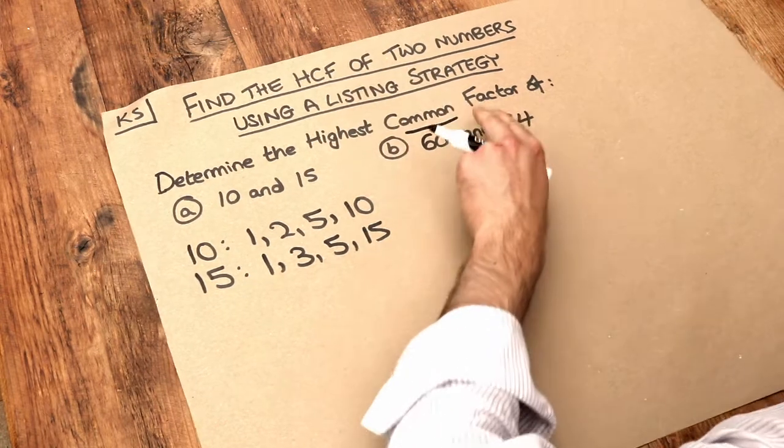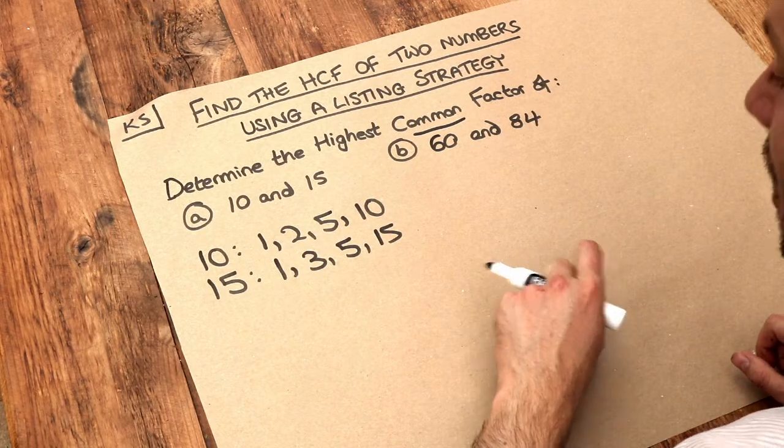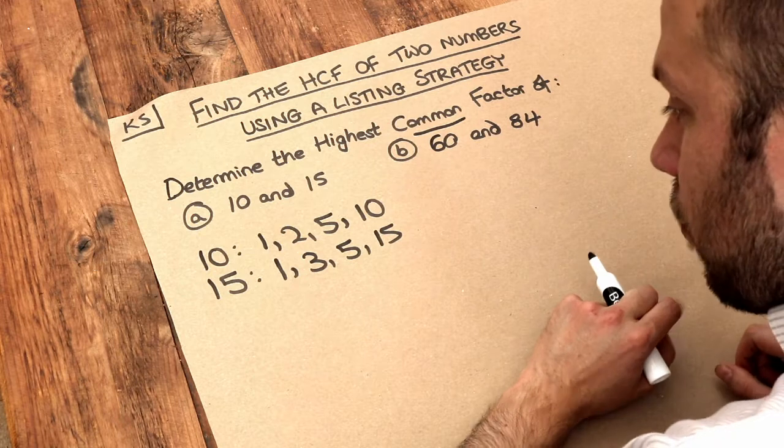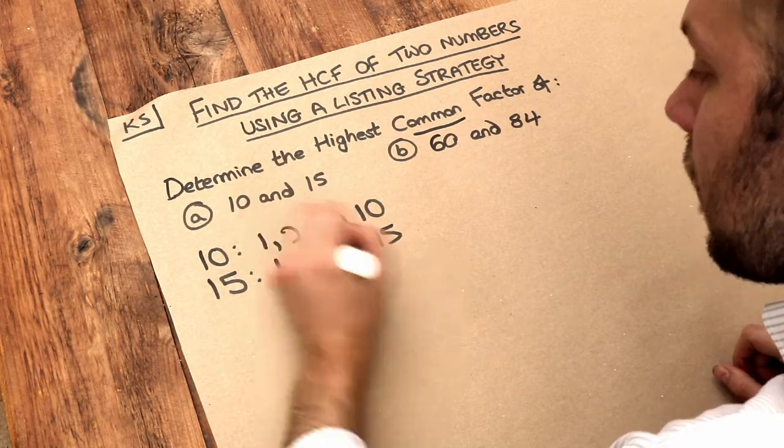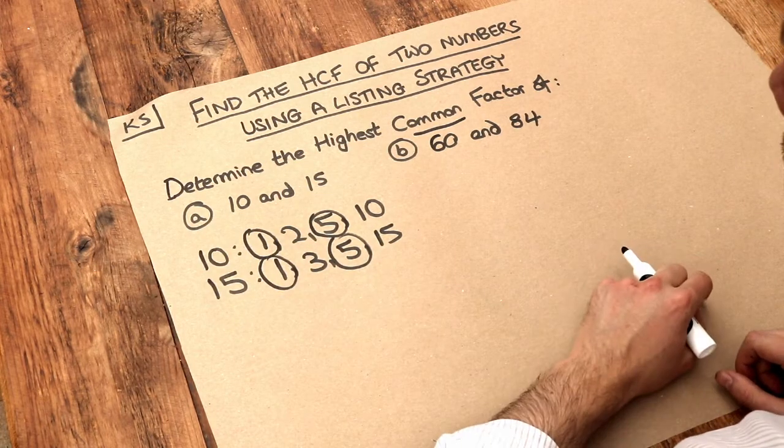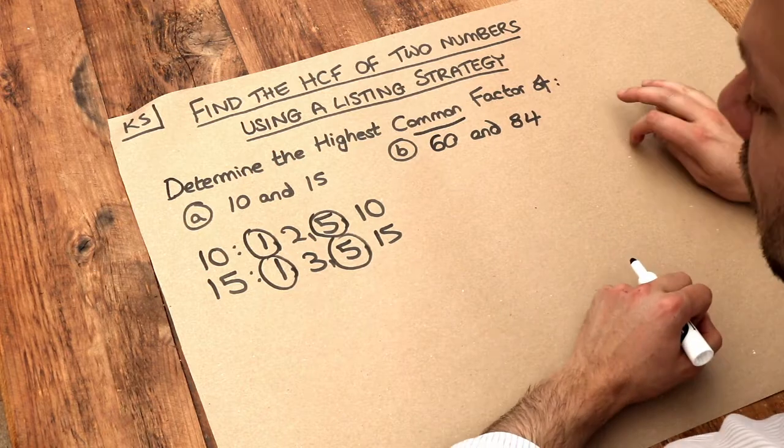Now if we want a common factor of 10 and 15, it means we need to find a factor which is common to both lists, that is in both lists. Well, can you see that 5 is in both lists and 1 is in both lists as well? So 1 is a common factor of 10 and 15, and so is 5.